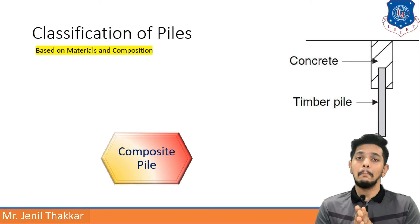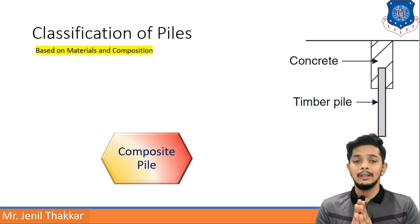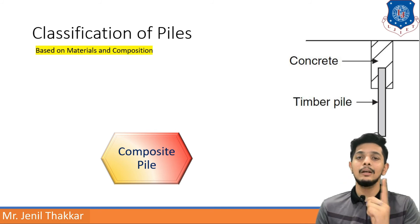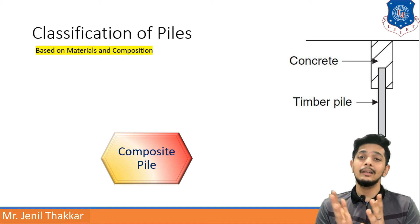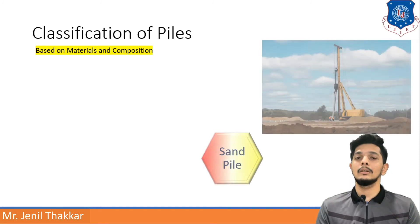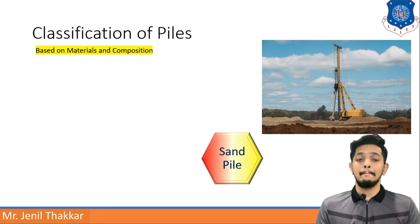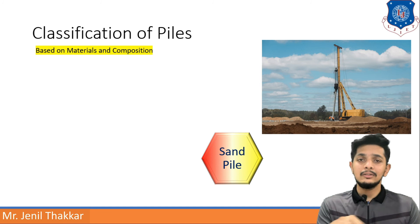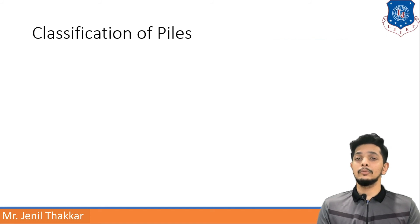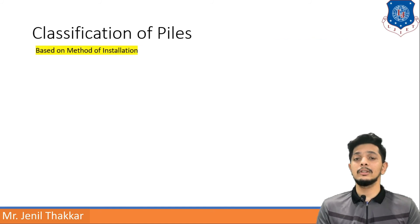Composite pile is a very emerging type because it is made up of two materials. Here you can see a pile that is made of timber but layered with concrete, giving strength from both concrete and timber. Sand piles are made up of sand and are inserted like a cast-in-situ structure, not a precast one.